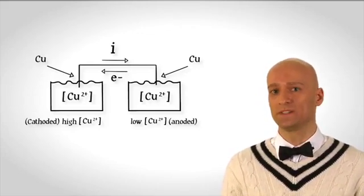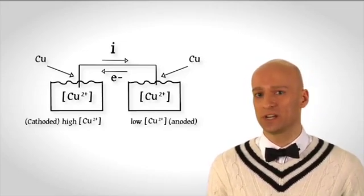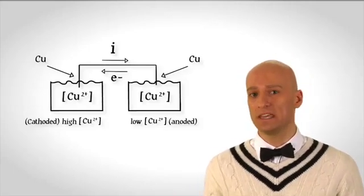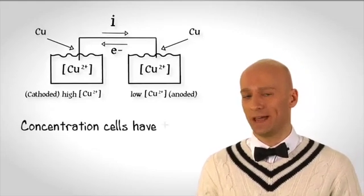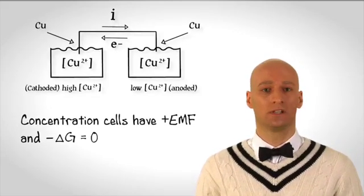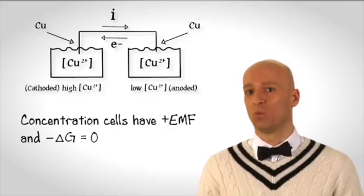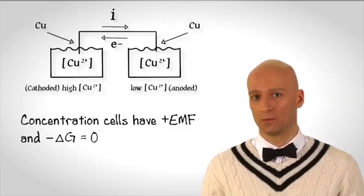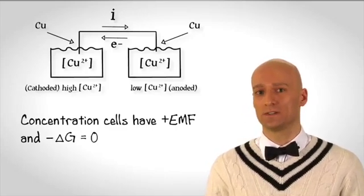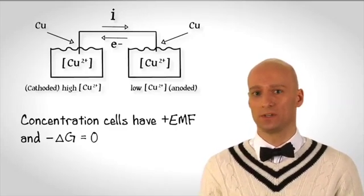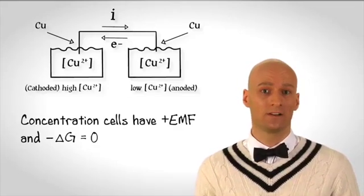This reaction will take place and the movement of electrons will occur until the concentrations of copper ions in the solution become equal over time. One thing to point out is that the standard EMF of a concentration cell, by definition, is zero, because one of the conditions of standard conditions is one molar concentrations of all reactants. Since all reactants are at one molar concentration, they are by definition equal, and therefore a concentration cell will register a standard EMF of zero.